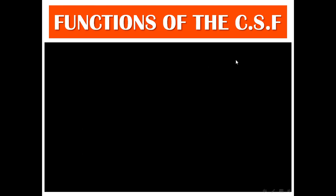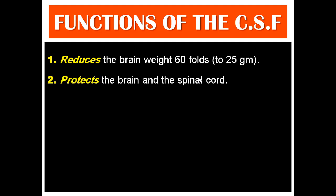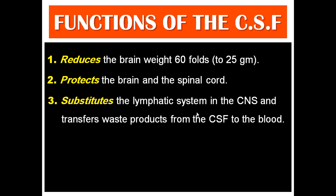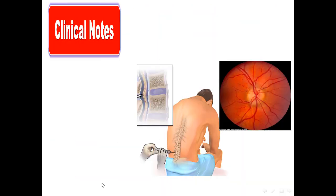The functions of CSF include: reducing brain weight — the brain weighs 1400 grams, but we only feel about 25 grams because the brain floats on the CSF, reducing its effective weight 60-fold. The fluid also provides protection. CSF replaces the lymphatic system in the CNS, transferring waste products to the blood. It maintains the chemical environment through communication with the brain extracellular space and helps regulate intracranial pressure.